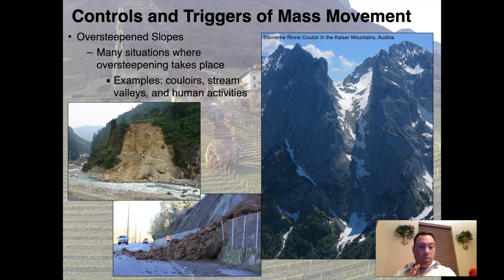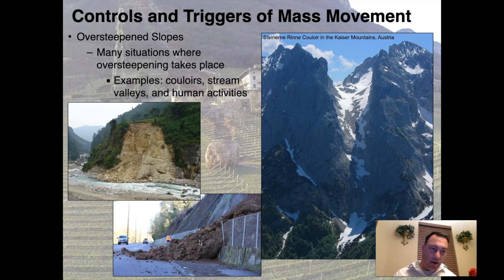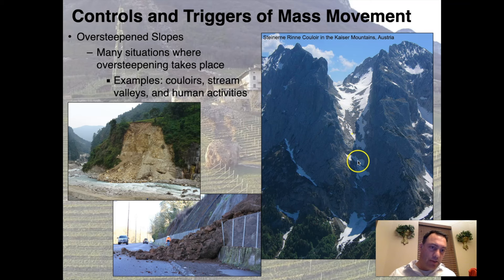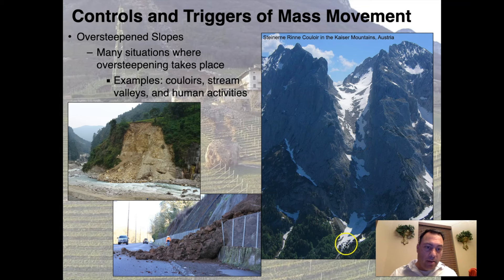Oversteepening slopes will give you landslides — there's a huge amount of debris and material that comes down. The reason couloirs stay relatively clean is that snow occasionally generates avalanches that clear them out. There's a reason why avalanches and skiers tend to happen in the same locations — they like the same places. Famous couloirs are found across the world and are both skiing destinations and avalanche zones.